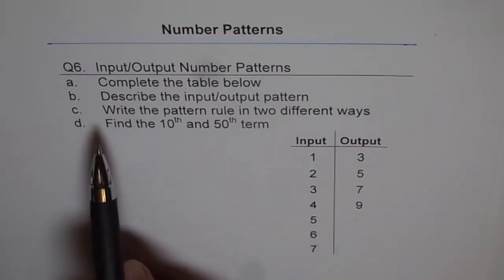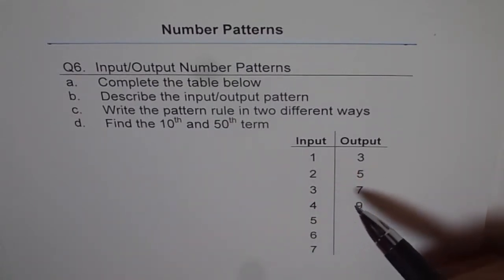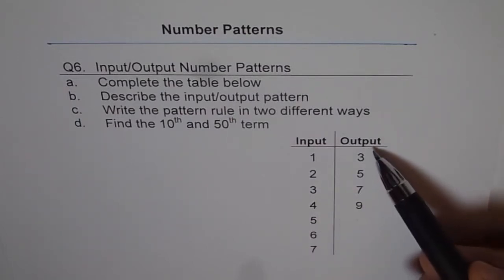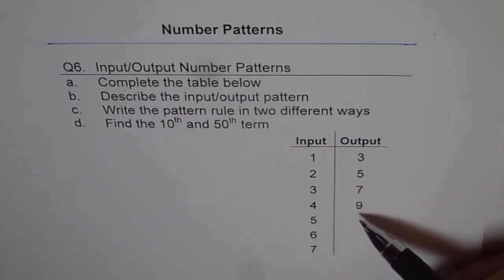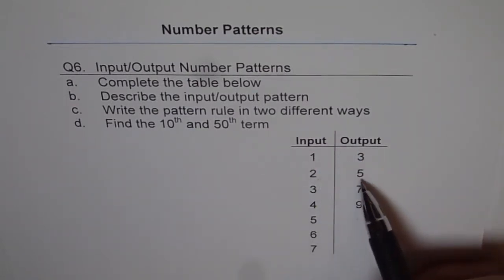And let me go through C also. Write the Pattern Rule in two different ways. So you can write any Pattern Rule. You can write Pattern Rule for Inputs going up by one, Pattern Rule for Output going up by twos, and Pattern Rule from Input to Output.